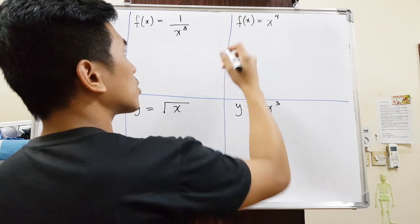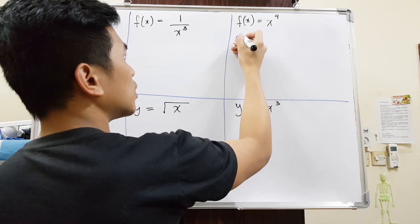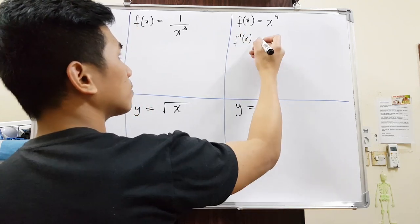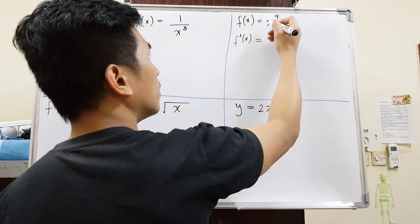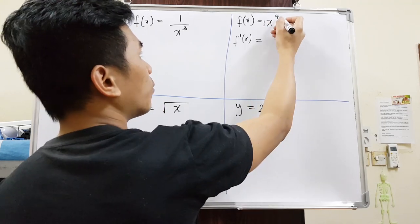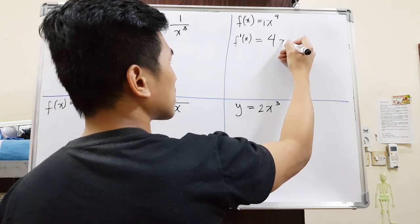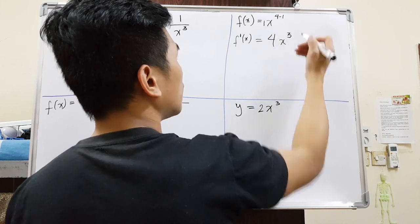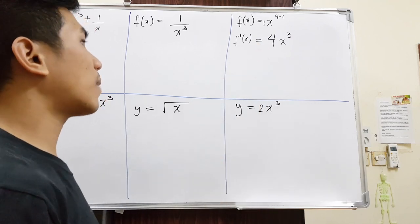For example, we want to derive this — find the derivative of this expression. This symbol with an apostrophe represents the derivative. When you're deriving, the power will come forward and multiply to the coefficient. So 4 times 1 is just 4, and the power will be less by 1. So it will be 4x cubed. That is how you derive using the power rule.